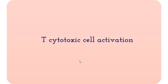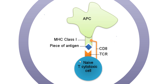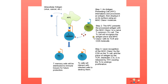Now let's talk about T cytotoxic cell activation. Cytotoxic cells are used for intracellular antigens. To be activated, they must interact with an antigen-presenting cell using an MHC class 1 molecule to hold its piece of antigen. The cytotoxic T cell uses its TCR and CD8 marker to recognize the antigen and MHC on the APC. This binding initiates the cytotoxic T cell to display interleukin receptors, and it can now be stimulated by interleukin 2 released by T helper 1 cells.